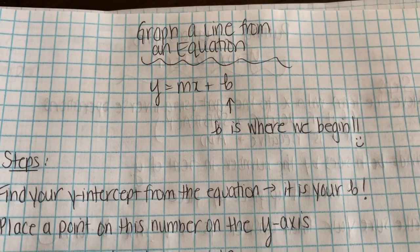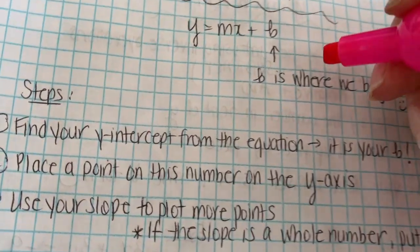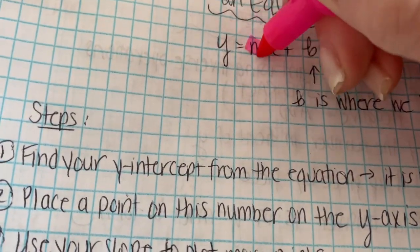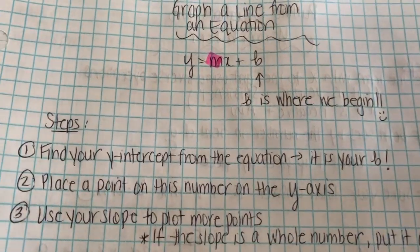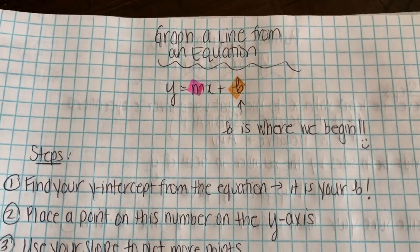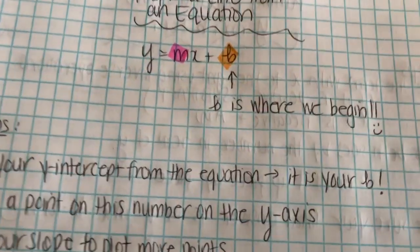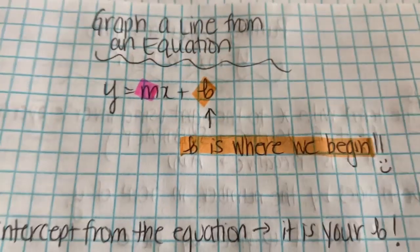So same as yesterday, we're looking at y equals mx plus b. m is still our slope, so we're using rise over run, and b is our y-intercept. When we're graphing a line from the equation, something helpful to remember is b is where we begin. That is where you're going to start.